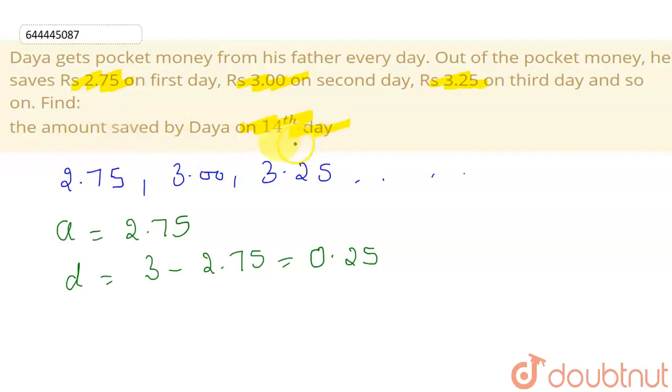For that I can use our formula for nth term, which is a + (n-1)d in an AP. So we have to find on 14th day, so a₁₄ will be equal to a is 2.75, n will be 14 as I am finding on 14th day, and d is given as 0.25. I can write it as 1/4 also.